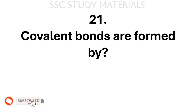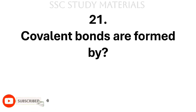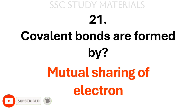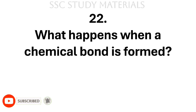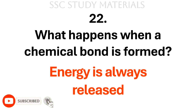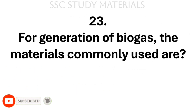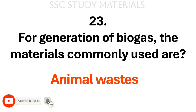Question No. 21: Covalent bonds are formed by? Answer: Mutual sharing of electrons. Question No. 22: What happens when a chemical bond is formed? Answer: Energy is always released. Question No. 23: For generation of biogas, the materials commonly used are? Answer: Animal wastes.